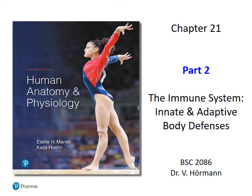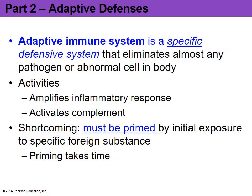Welcome back to chapter 21 on the immune system. In part two we're going to explore the adaptive body defenses. In part one we discussed that our immune system has two defense systems to protect our body from foreign pathogens. The first is the innate system, which is nonspecific — your first and second line of defense such as your skin, mucous membranes, natural killer cells, complement proteins, interferons, and the induction of fever and inflammation.